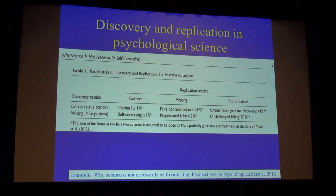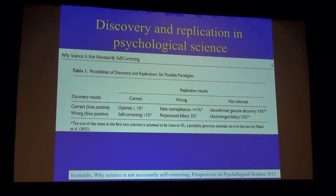About 2% was perpetuated fallacy — someone got it wrong and the same bias was repeated again. About 43% was unconfirmed genuine discoveries, meaning someone found something correct but nobody wanted to try it again. And about 53% was unchallenged fallacy, which means something was wrong, found its place in the literature, and there it stayed.